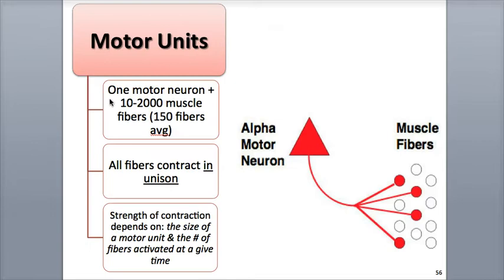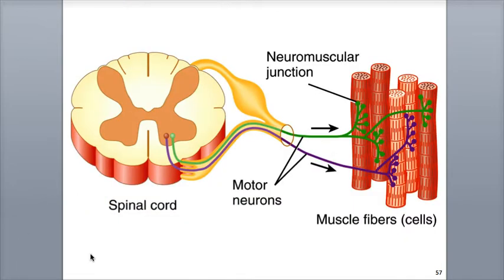A somatic motor neuron and all of the skeletal muscle fibers it stimulates is called a motor unit. On average, there are 150 fibers in a motor unit, with some muscles containing less or more based upon their strength of contraction. All of the muscle fibers in a motor unit contract simultaneously when an action potential is received, and relax simultaneously once it's over. A motor unit's size has a direct effect on its strength of contraction.